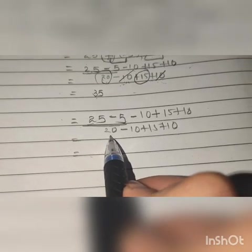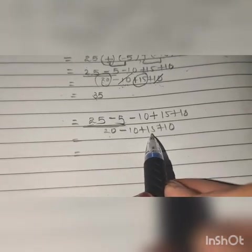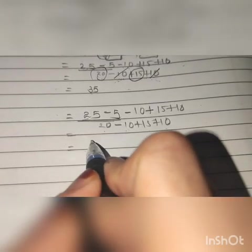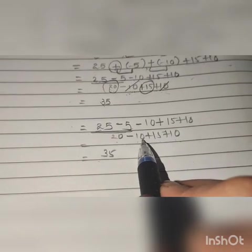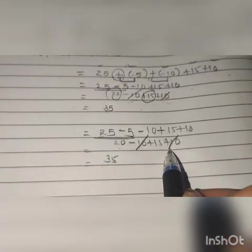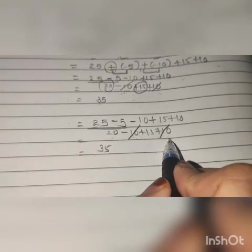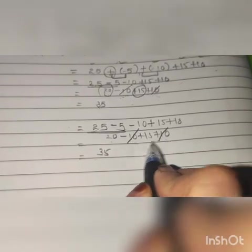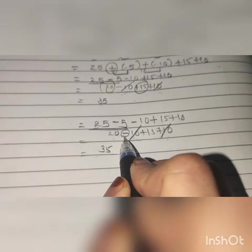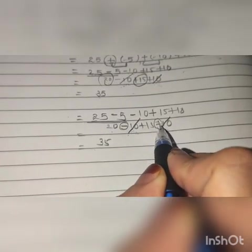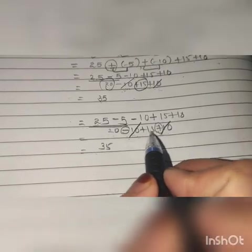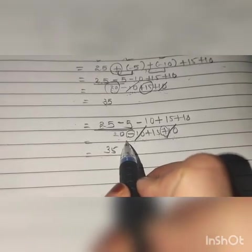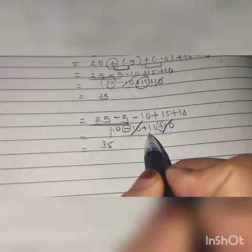Now look, 20 minus 10, 10, plus 15, 25, plus 10, 35. Or if you don't want to do it in that way, then another way you can do that is minus 10 and plus 10 cut. How? 10 and 10 are same numbers but their signs are different. Here minus and here plus. Their signs are different. Means 10 minus 10, 0. So if the numbers are same and their signs are different, then we will make 0. So now 20 plus 15, the answer will be 35. Understood? Next.